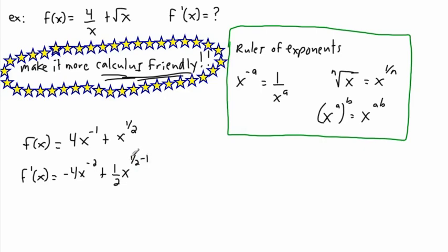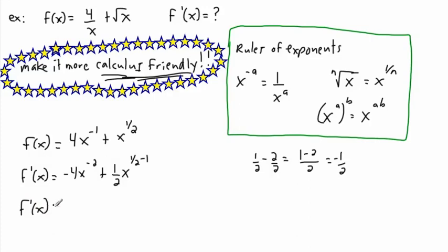Now how do I deal with 1/2 minus 1? I should make this a common fraction. So 1/2 minus 1 is the same as 1/2 minus 2/2, using a common denominator since 2/2 equals 1. Therefore 1/2 minus 2/2 equals negative 1/2. That means f prime of x equals negative 4 x to the power of negative 2, plus 1/2 x to the power of negative 1/2.